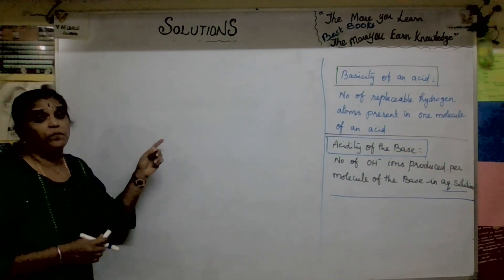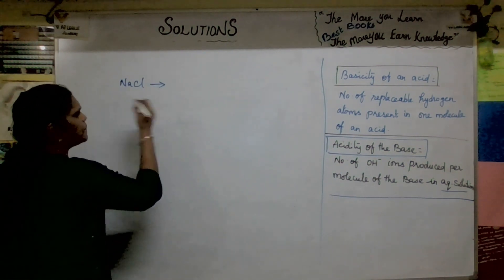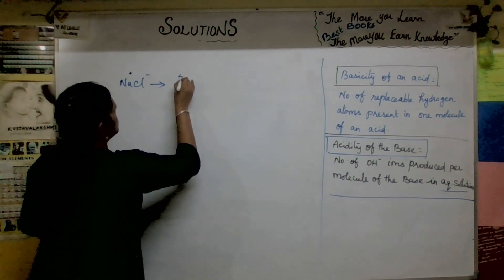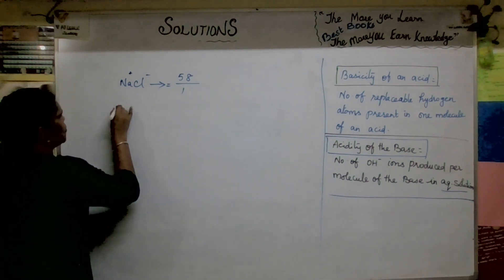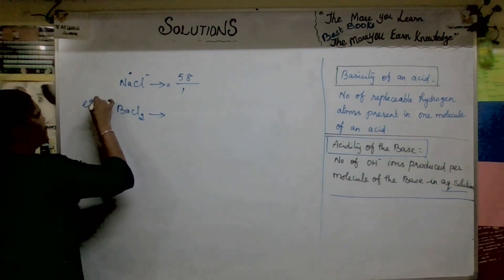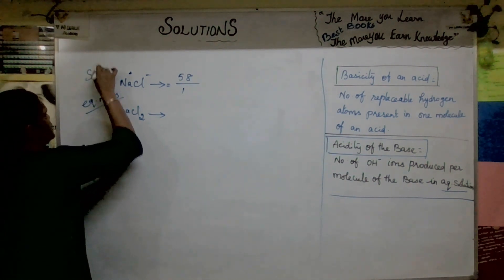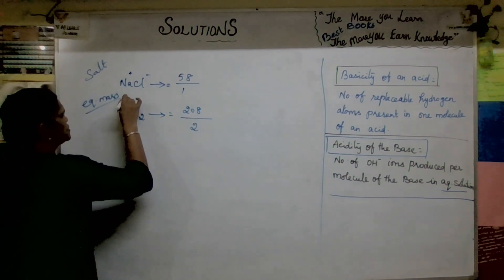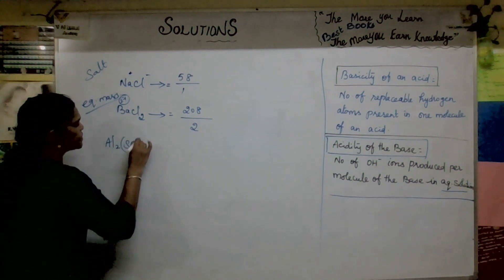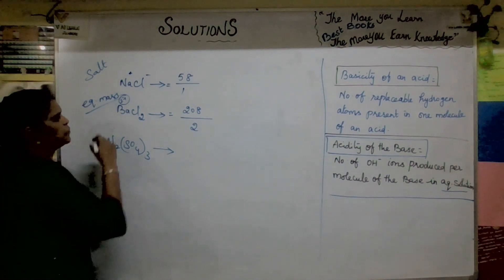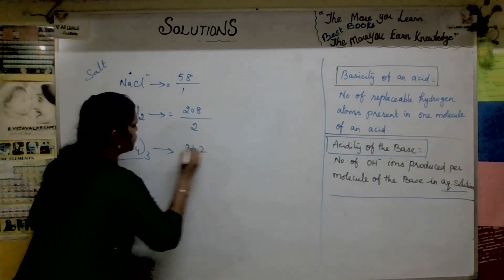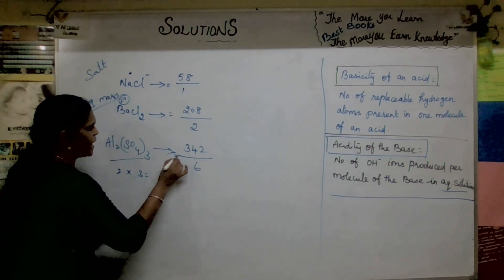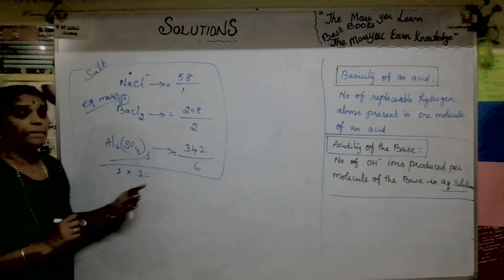Now for equivalent mass of salts: for NaCl, it is molecular mass divided by charge = 58 ÷ 1. For BaCl2, it is 208 ÷ 2. For Al2(SO4)3, molecular mass 342 divided by 6 (since 2×3 = 6), giving the equivalent mass of each salt.